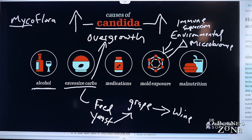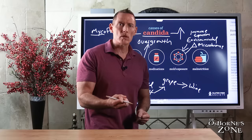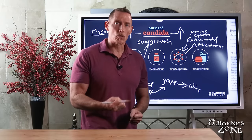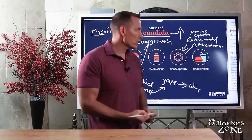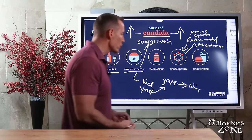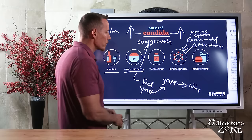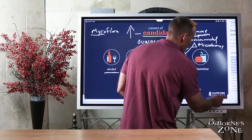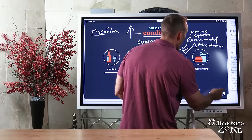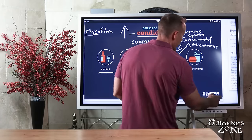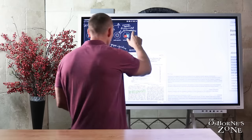Malnutrition and vitamin and mineral deficiencies also contribute. Nutrients are the tools your immune system uses to function, so nutritional deficiencies can dramatically increase the risk for developing a yeast or candida overgrowth.